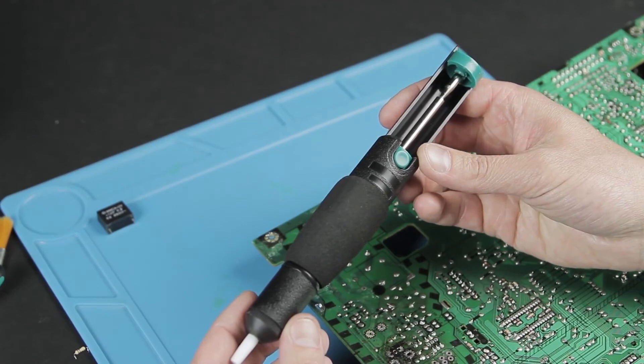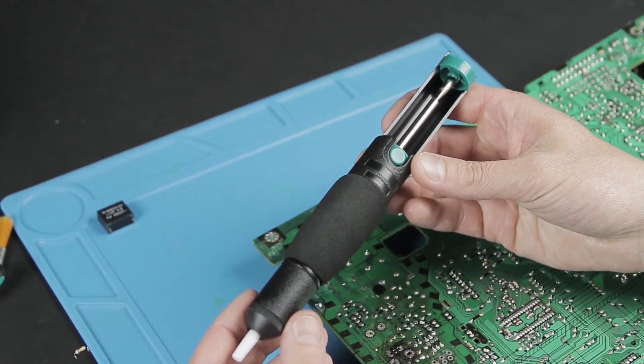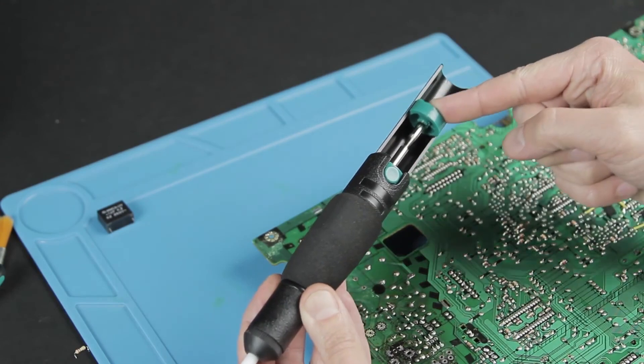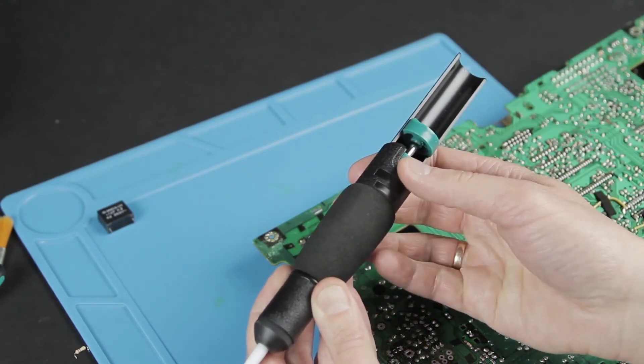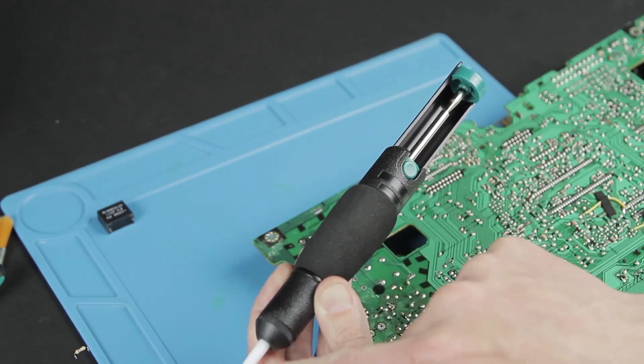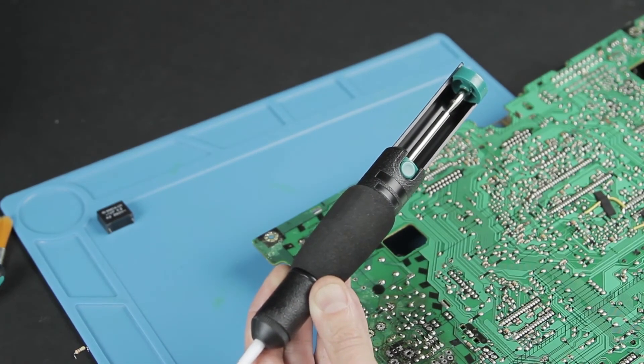For components with many pins, such as chips, you can use a solder remover tool. Simply squeeze the spring, press the button, and the molten solder is sucked into the reservoir along with air.